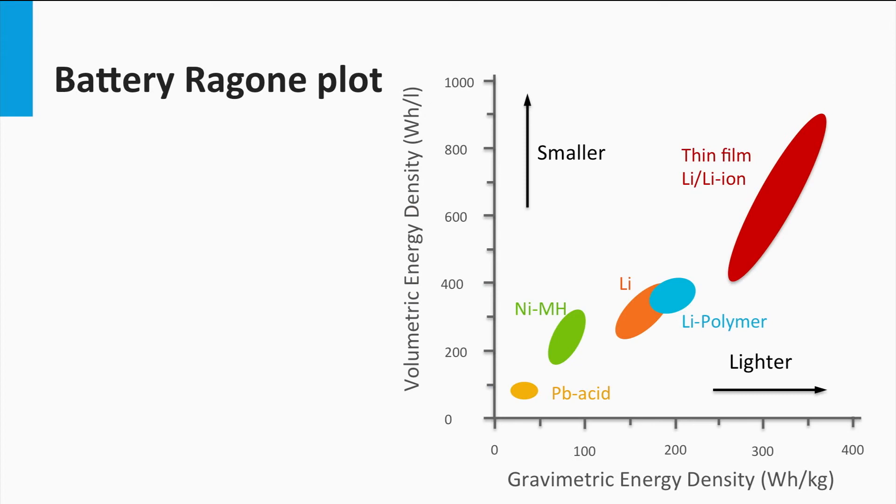Let's look at the Ragone plot specific to the typical batteries only. This is slightly different from the Ragone plot shown earlier, as this shows the comparison between the various battery technologies in terms of gravimetric energy density and volumetric energy density. Volumetric energy density is the amount of energy stored per volume of battery. The typical unit of measurement is watt-hours per liter. Higher the volumetric energy density, smaller the battery size. Gravimetric energy density is the amount of energy stored per mass of the battery. The typical unit of measurement is watt-hours per kilogram. Greater the gravimetric energy density, lighter the battery will be.